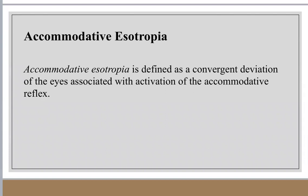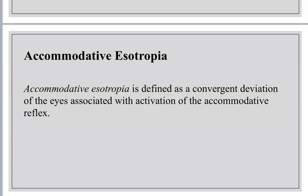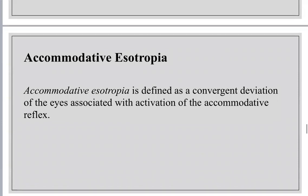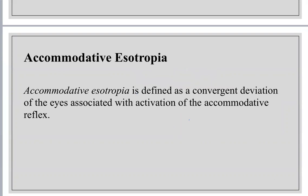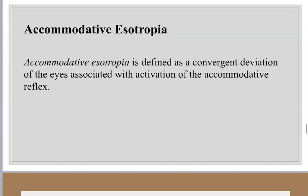Now let's move to accommodative esotropia. Accommodation consists of three components: increased power of the crystalline lens, convergence, and miosis. Each diopter of accommodation normally produces three to five prism diopters of convergence. If accommodation is increased, convergence is increased, leading to accommodative esotropia.